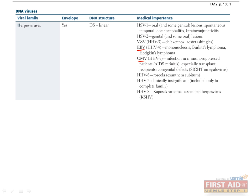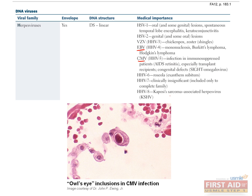Cytomegalovirus, or CMV, is another herpes virus. Key things to remember are that it is the cause of neonatal infections, or the C in TORCH, and that it is often transmitted to transplant recipients. In adults, CMV can cause a disease similar to mono but with a negative monospot test — no heterophile antibodies are formed. In newborns, CMV can cause cytomegalic inclusion disease, with symptoms such as petechial rash, seizures, hearing loss, and other CNS deficits. Diagnosis is made by seeing infected mononuclear cells with owl's eye inclusions.